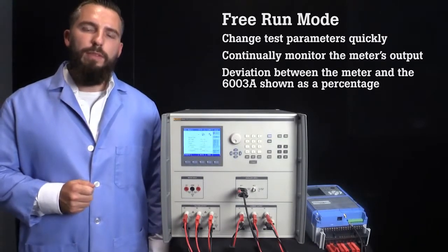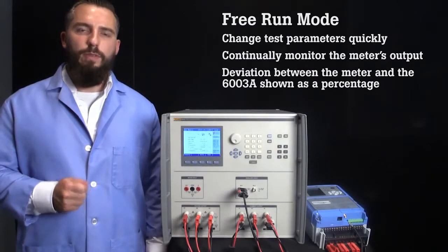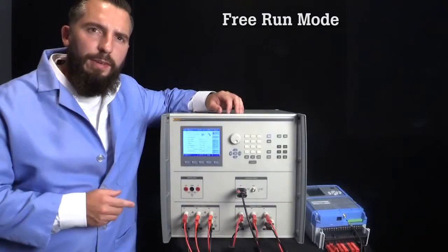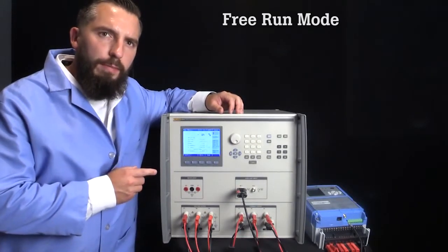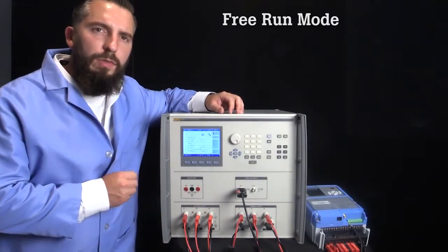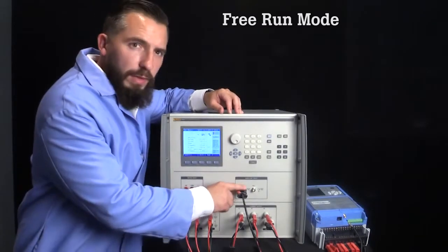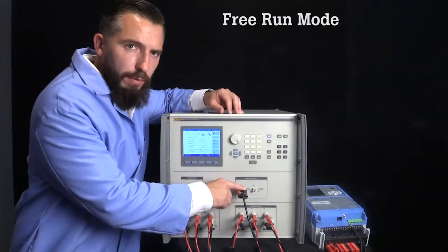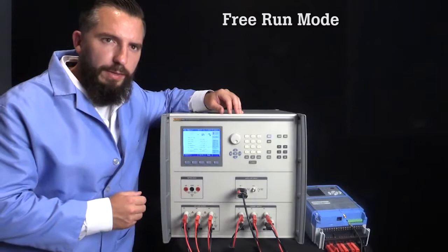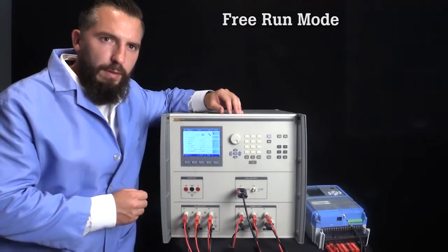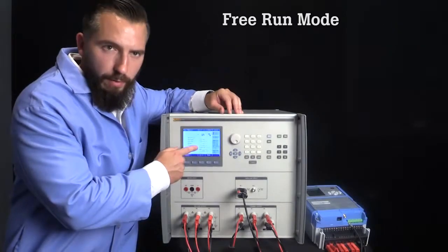The deviation between the meter and the 6003A is continuously calculated and shown as a percentage on the display. To demonstrate, I've configured a test for 200 volts AC, 1 amp, at 50 hertz. Since we'll be measuring the pulse output of the meter, I've connected the pulse output of the meter under test to input 1 of the 6003A. I need to set the meter constant or frequency to match the meter's pulse output, which for this meter is 6400 pulses per kilowatt hour.